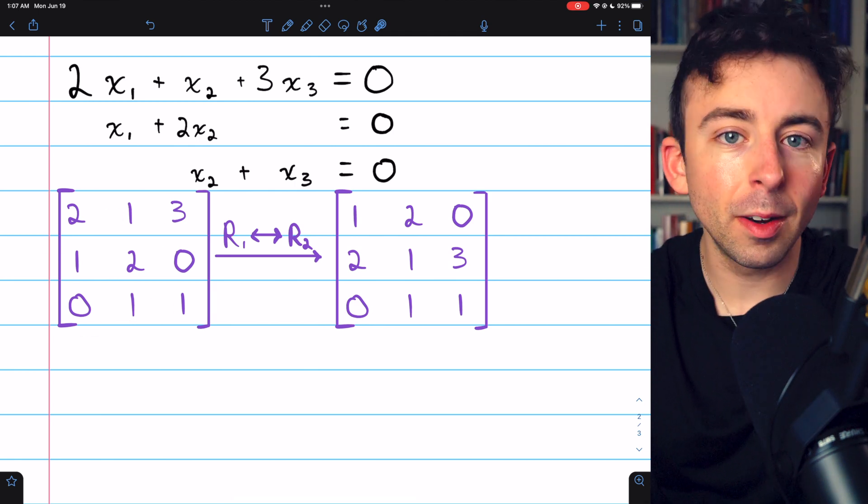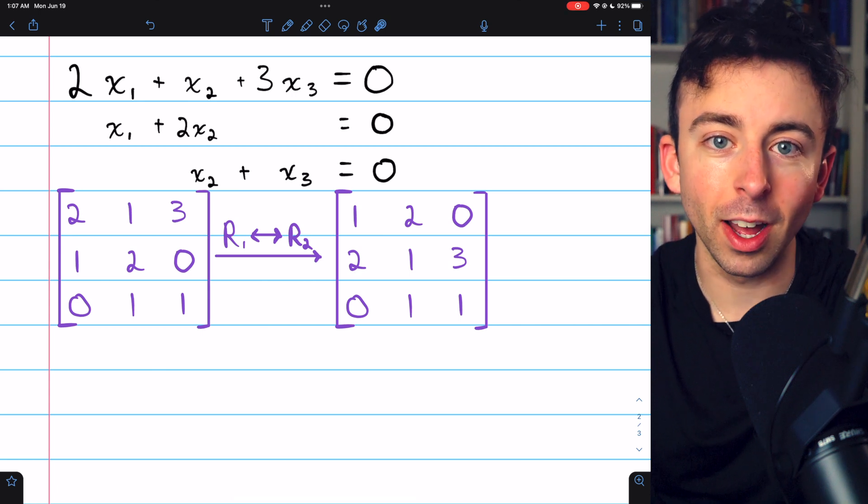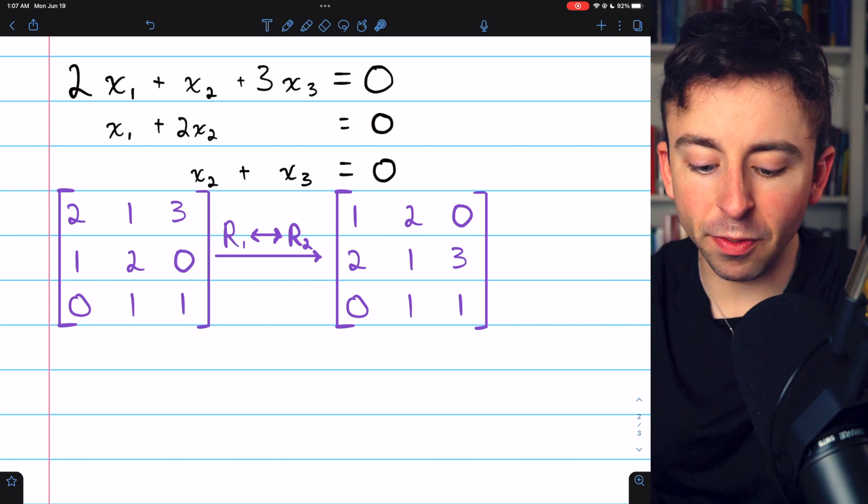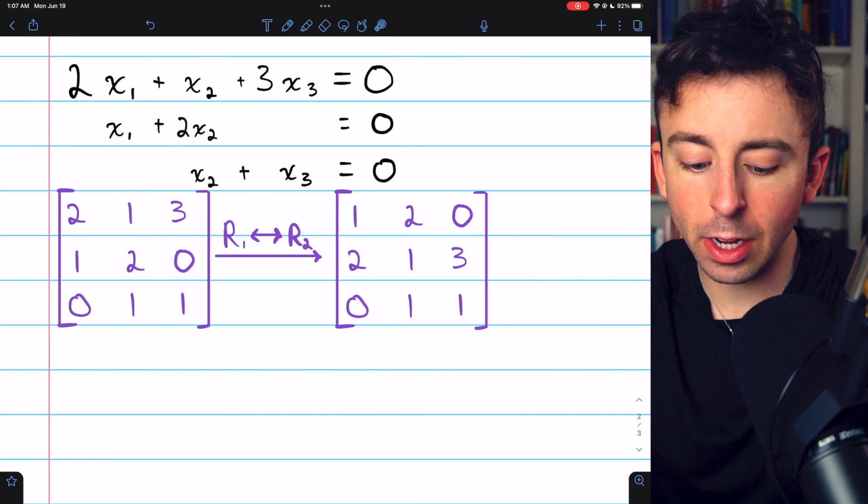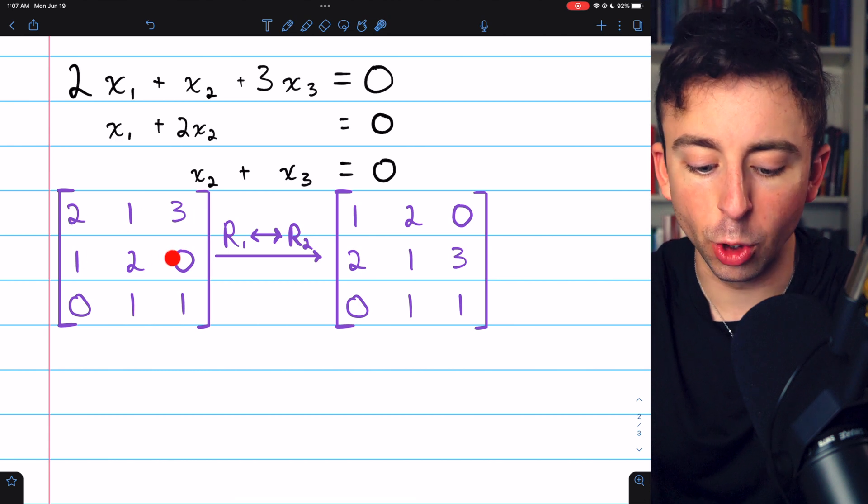That last constant column will be all zeros. So it's not really necessary to include it. So we'll just work with the coefficients and be sure to remember that our constants are not here when we get to the end.